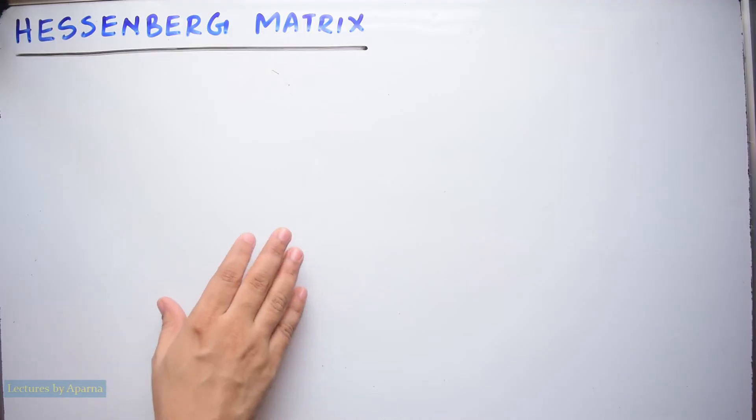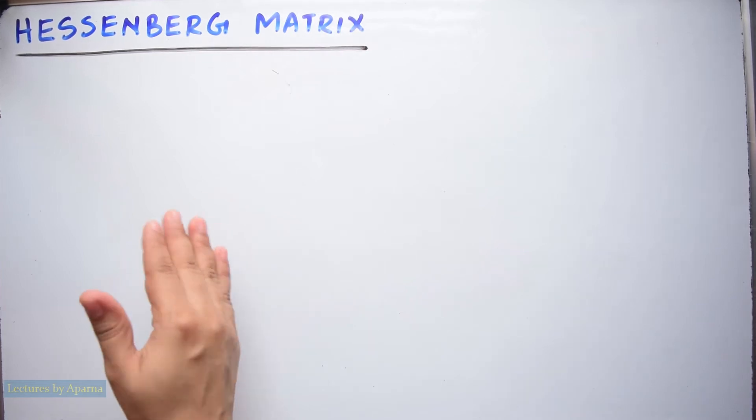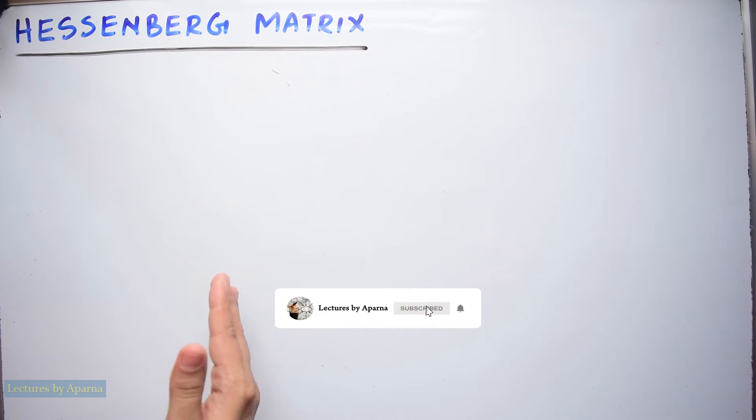In today's video, we will discuss a type of matrix called Hessenberg matrix. This matrix is named after Karl Hessenberg. It is almost a triangular matrix.